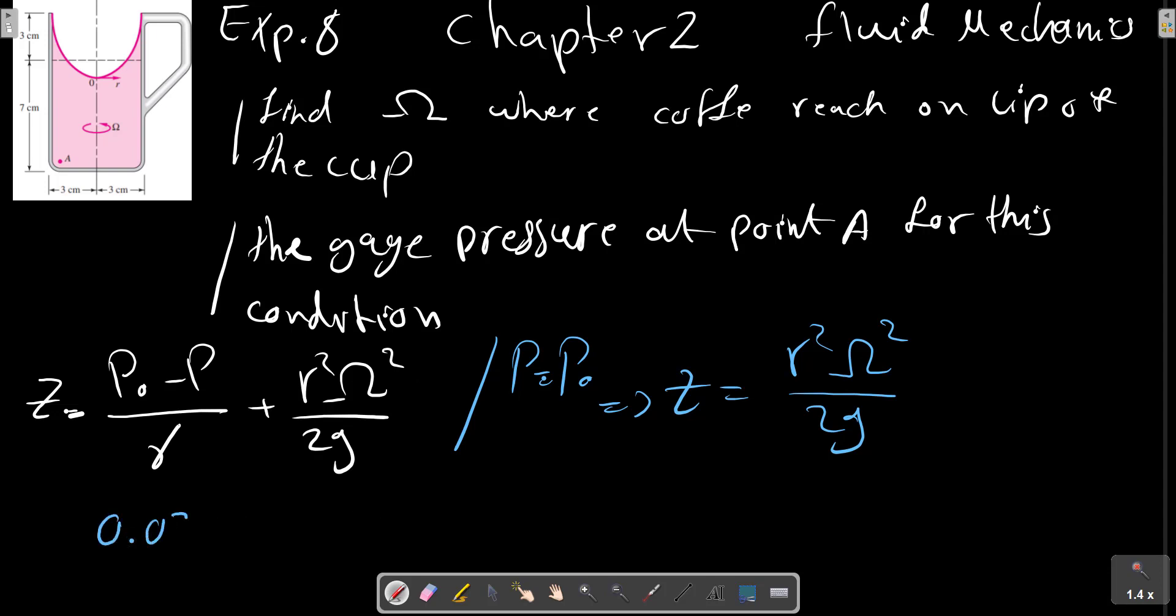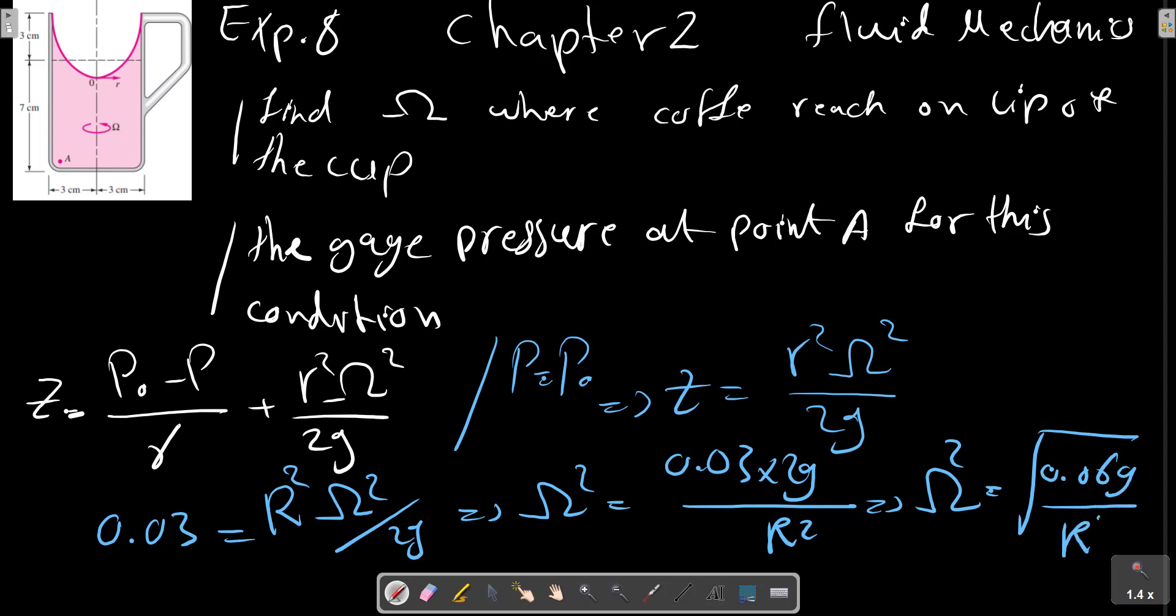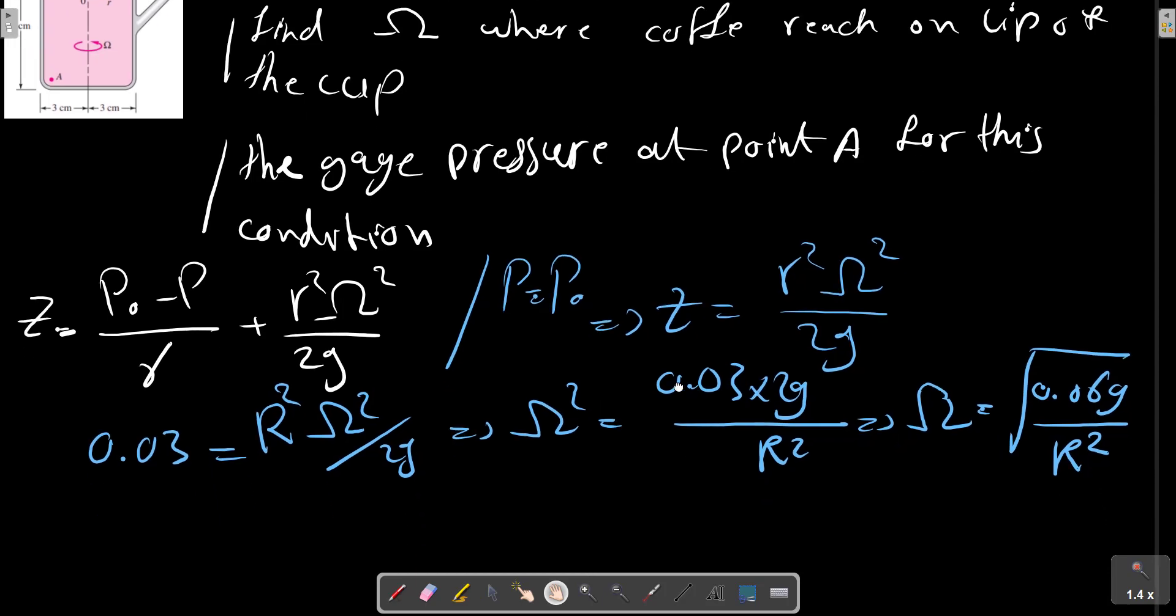We have Z equals to R squared Omega squared on 2G. So Omega squared equals to... We should make a correction here. This is the equation for Omega.